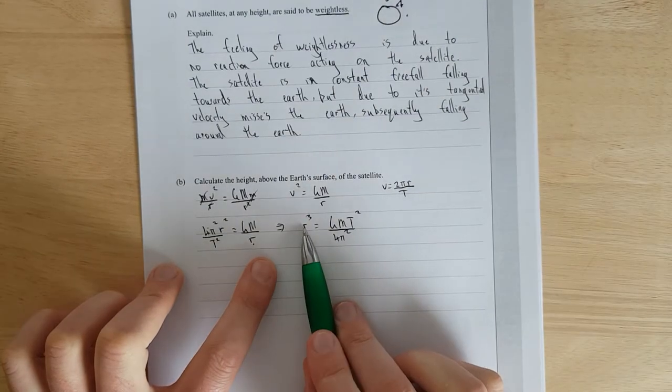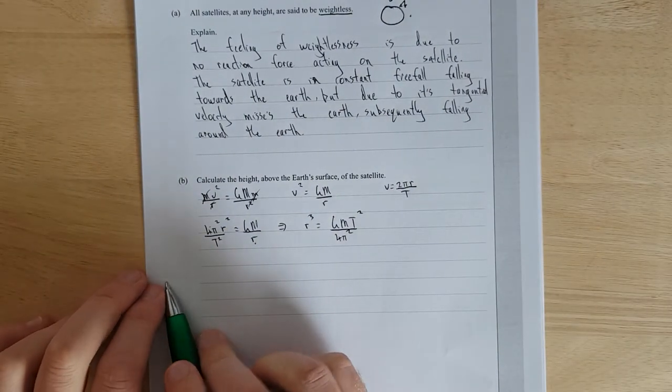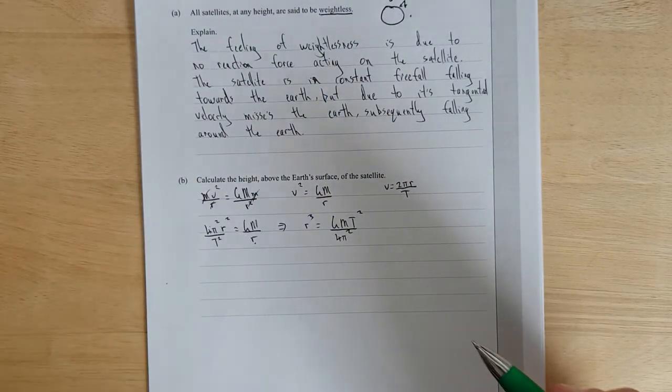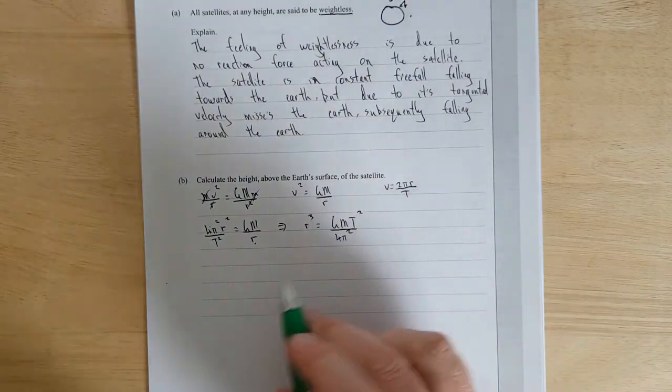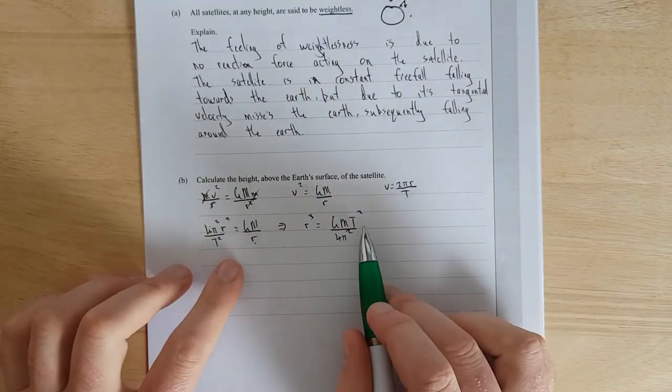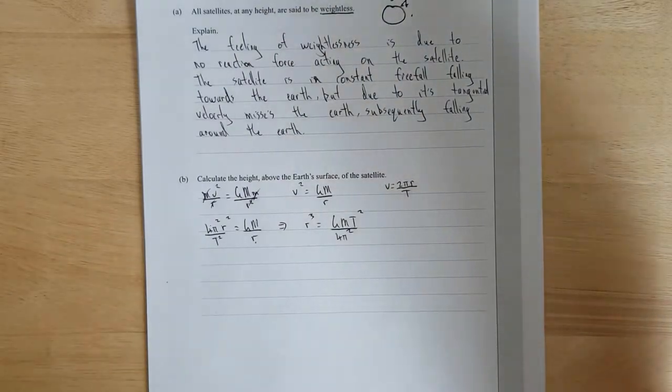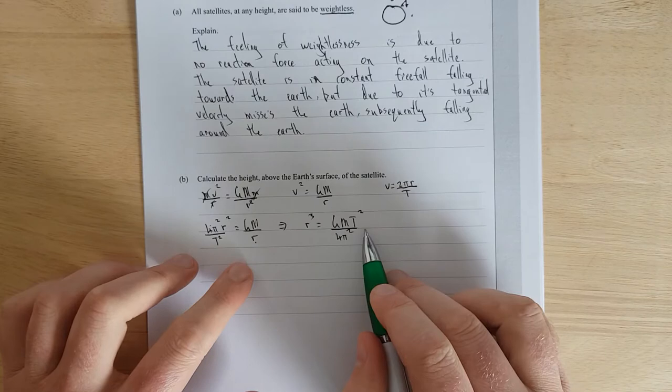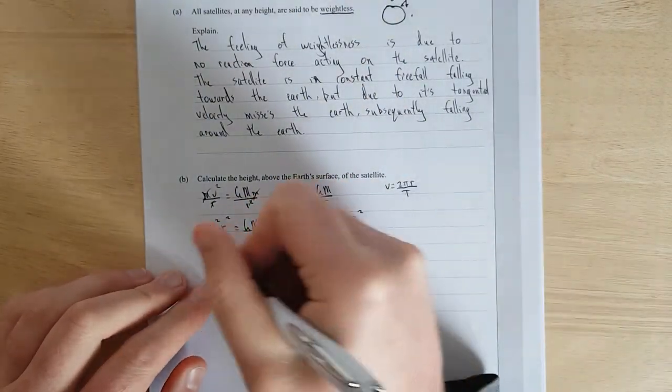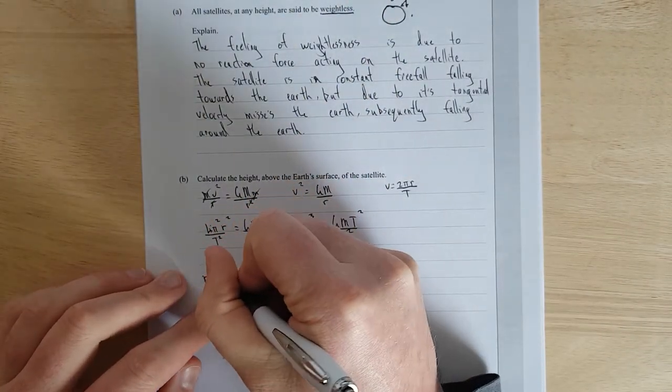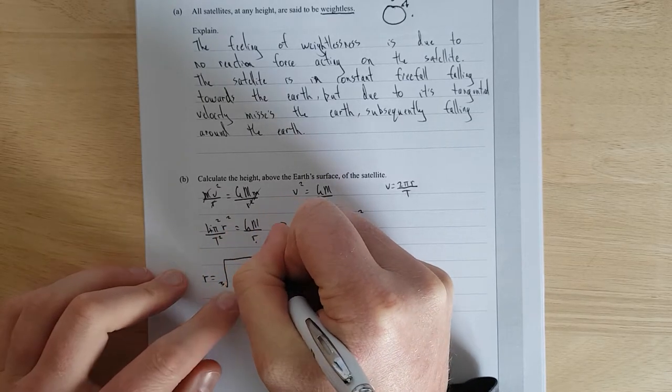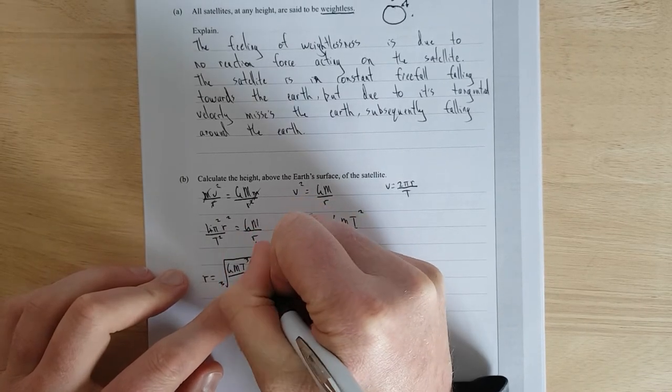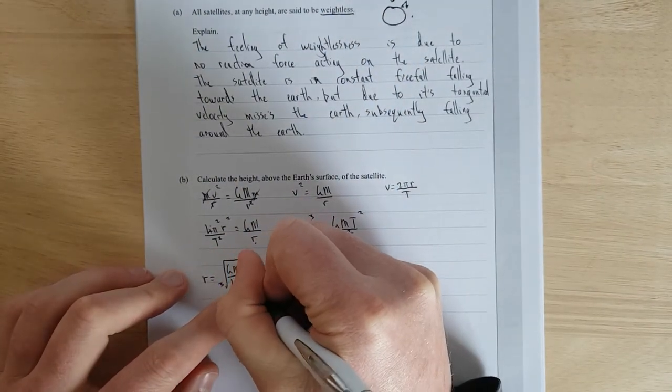And essentially I'm trying to find the radius from the center of the Earth to the satellite. And then I'll just subtract the radius of the Earth. That's my go-to. I've already done this question. Maybe I should have announced that before I started. But if I find the radius, I can get close to the answer. And then I'll just need to subtract the radius of the Earth. So essentially, the radius of the Earth, this little r, is going to be equal to the cube root of big G, big M, t², t cubed over 4π².